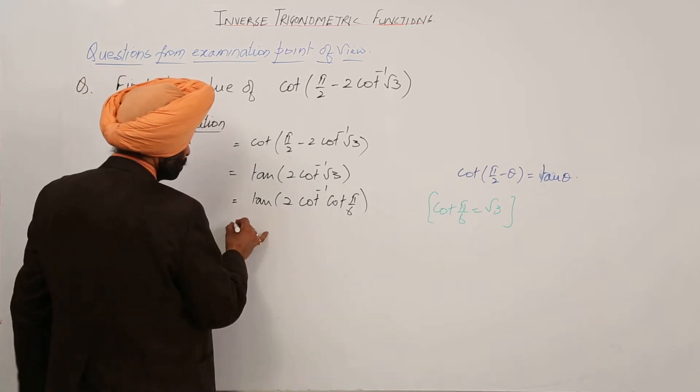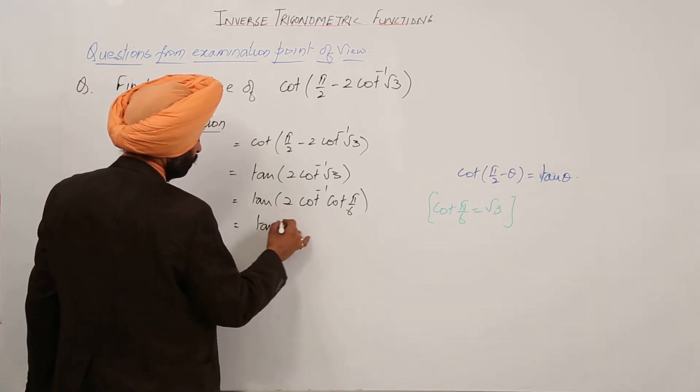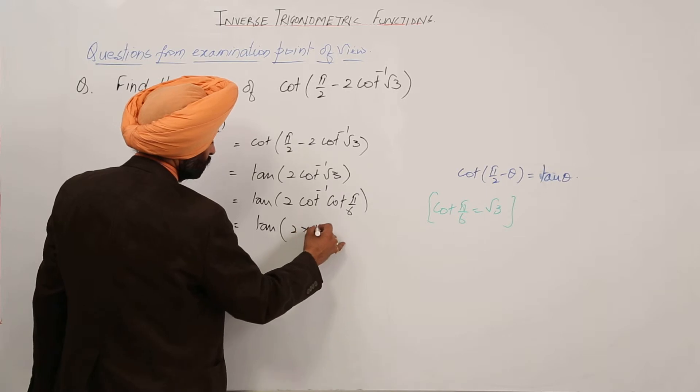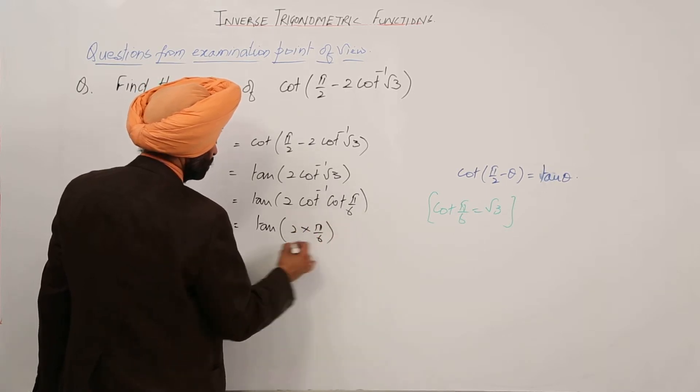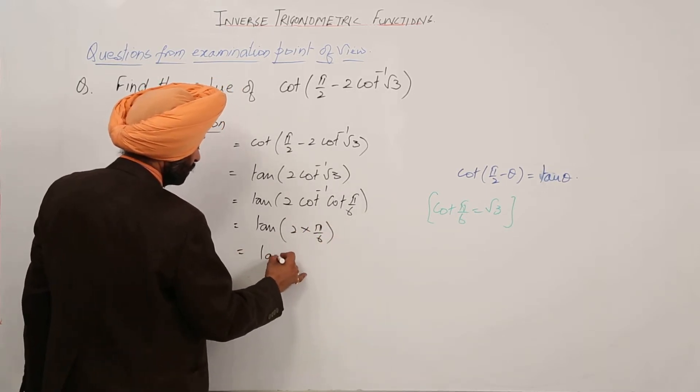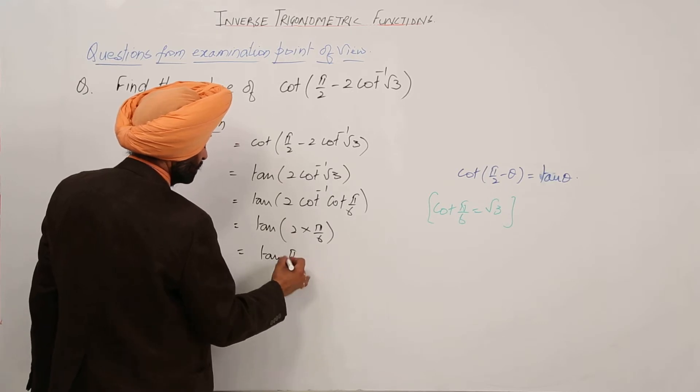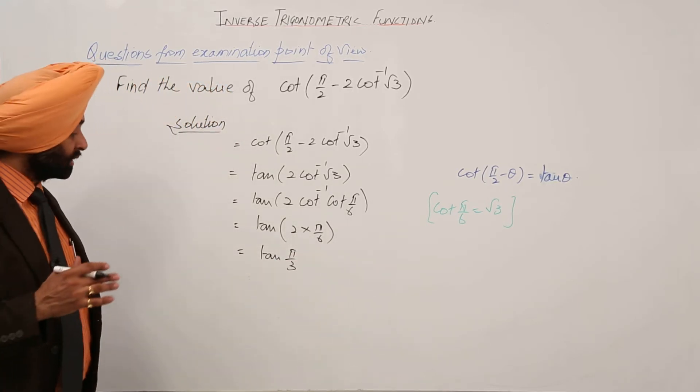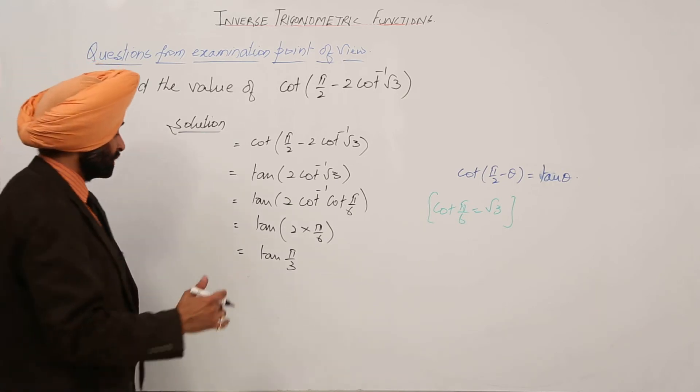So now we are left with tan(2 × π/6). This is equal to tan(π/3). And what is the value of tan(π/3)? Tan 60 degrees.